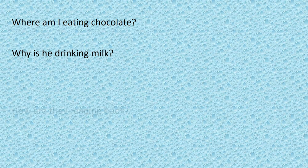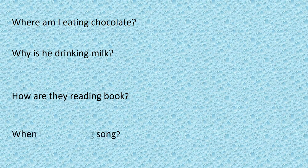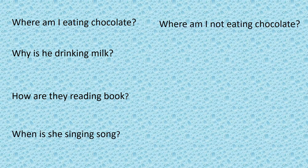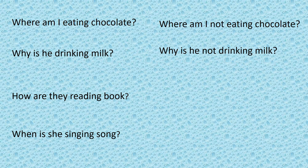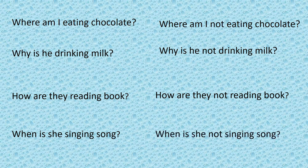Question type 2. Where am I eating chocolate? — मैं chocolate कहाँ खा रहा हूं? Why is he drinking milk? — वो दूध क्यों पी रहा है? How are they reading book? — वे किताब कैसे पढ़ रहे हैं? When is she singing song? — वो गाने कब गा रहे हैं? Where am I not eating chocolate? — मैं chocolate कहाँ नहीं खा रहा हूं? Why is he not drinking milk? — वो दूध क्यों नहीं पी रहा है? How are they not reading book? When is she not singing song? — वो गाना कब नहीं गा रहे हैं?